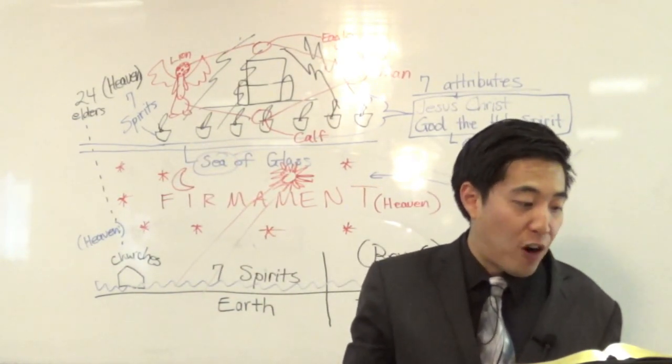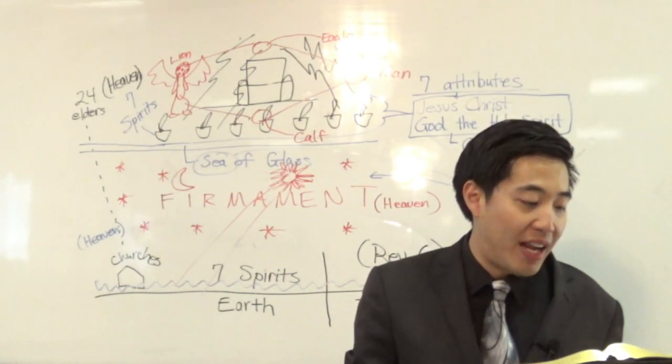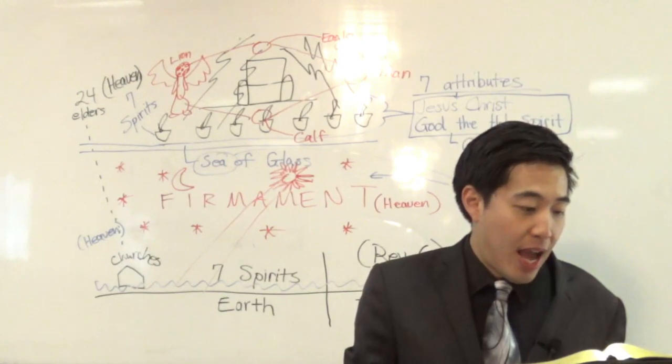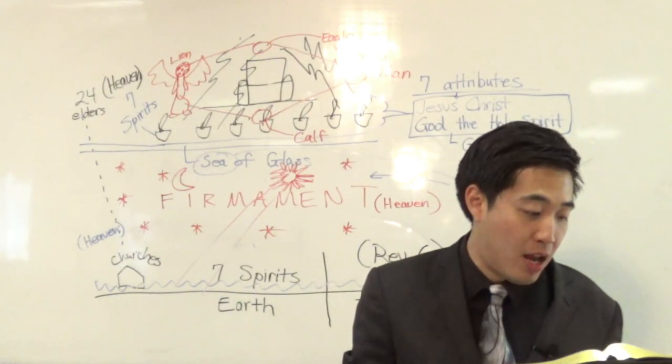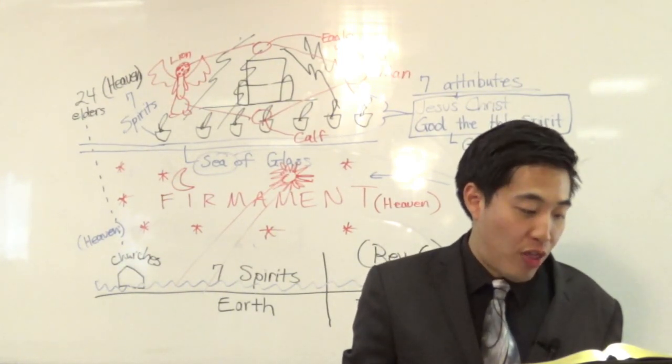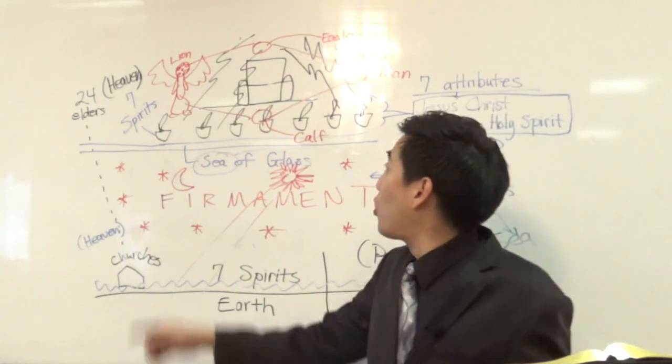And above the firmament, verse 26, that was over their heads, was the likeness of a throne, as the appearance of a sapphire stone. And upon the likeness of the throne, was the likeness as the appearance of a man upon it. Oh, there is no doubt. There is no doubt. That's referring to the same one.